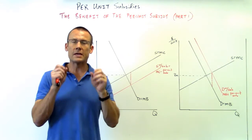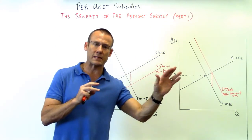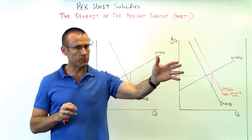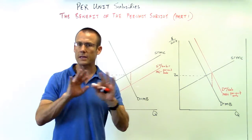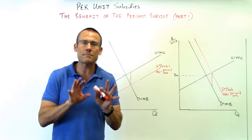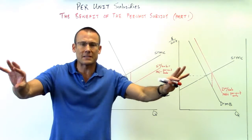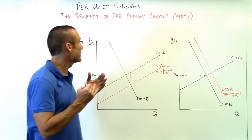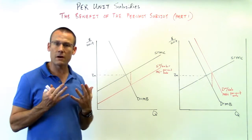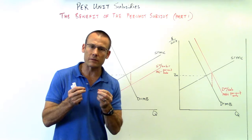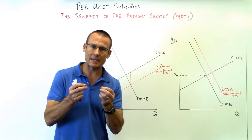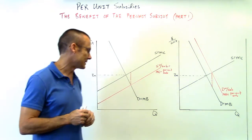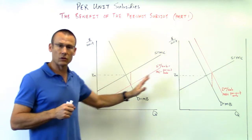It doesn't matter who the government writes the check to. They can write the check to the producer or to the consumer — either one. It doesn't matter who they physically give the money to. What matters, as far as who gets the benefits of the subsidy, is the relative elasticities — the relative supply and demand elasticities.